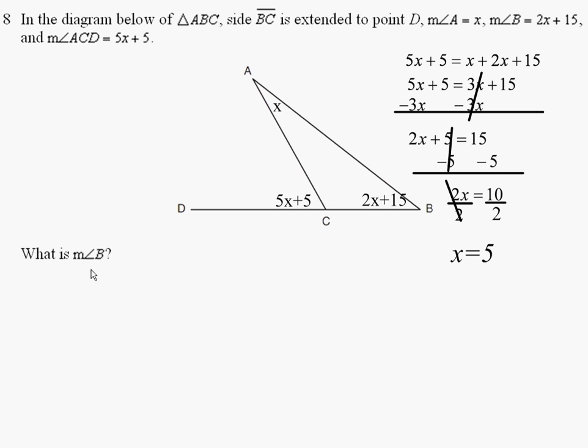And we are supposed to find the measure of angle B. So always make sure you go back and re-read the question to make sure you've answered it. If x equals 5, angle B is going to be 2 times 5 plus 15, and that's 25.